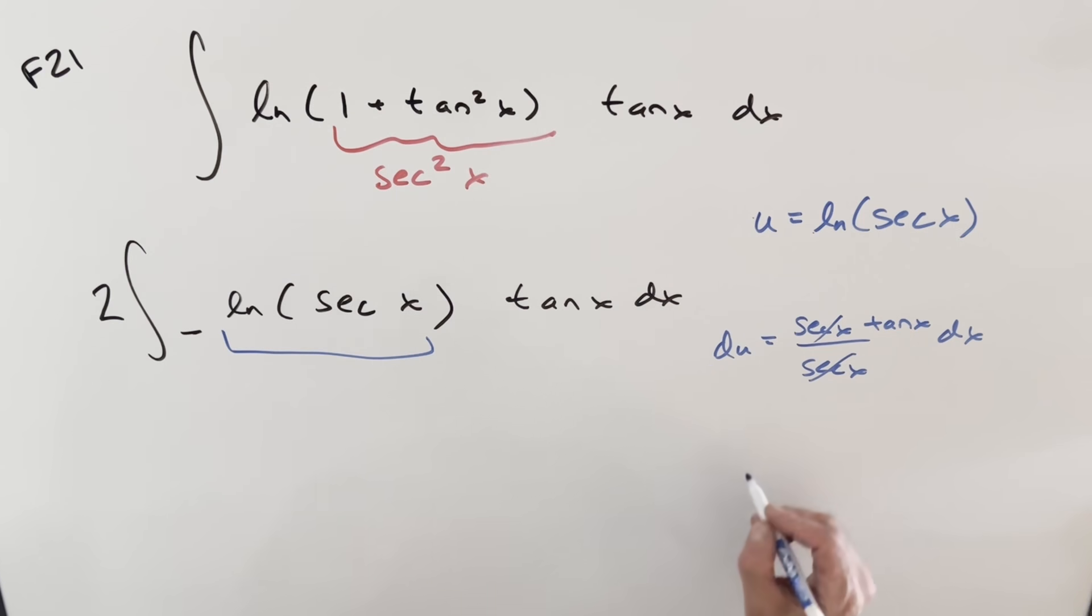But the secants cancel, and du is just going to be tan x dx. So this is our du right here, and this is u. Another way you might remember it is that the integral of tangent is just natural log secant x. So you can look at it that way as well.